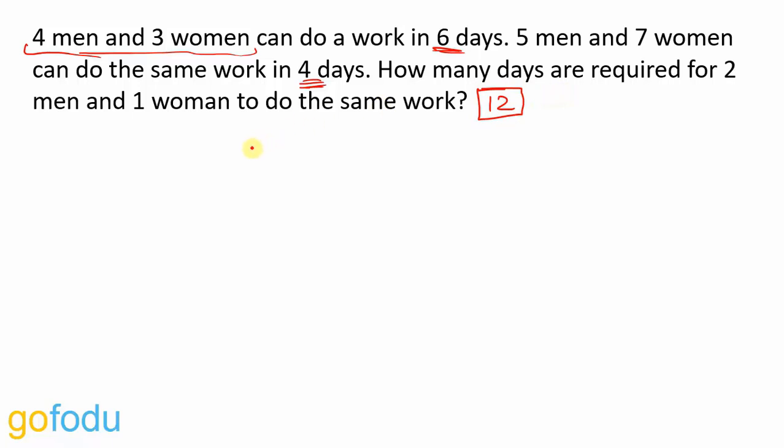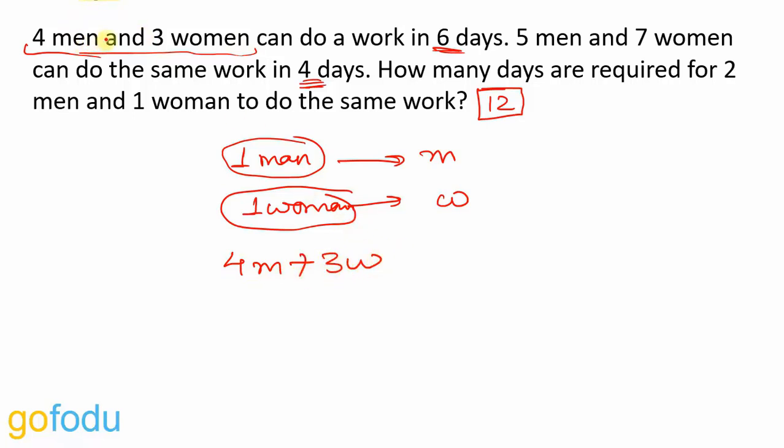Let's say work done by one man in one day be M and work done by one woman in one day be W. So four men and three women in one day they must be doing 4M plus 3W work, which will be equal to, they are finishing 12 units of work in six days, so in one day they must be doing 12 upon 6 that is 2 units of work.